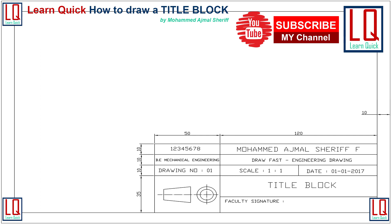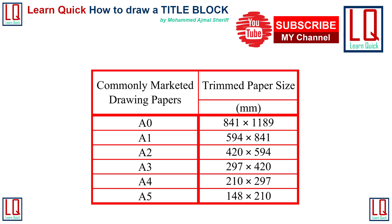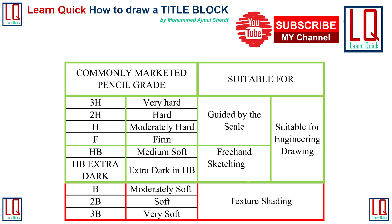Now we will try to draw a title block as given in a standard sheet. These are commonly marketed drawing papers. The dimension of A0 in landscape mode is 841 mm in height and 1189 mm in width. If you cut A0 into two halves by its width and trim it, you get A1 in portrait mode. The most commonly used size of paper for education purposes is A2, A3, and A4. I am choosing A4 for our title block drawing.